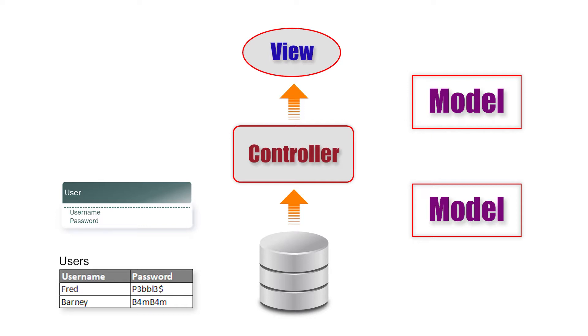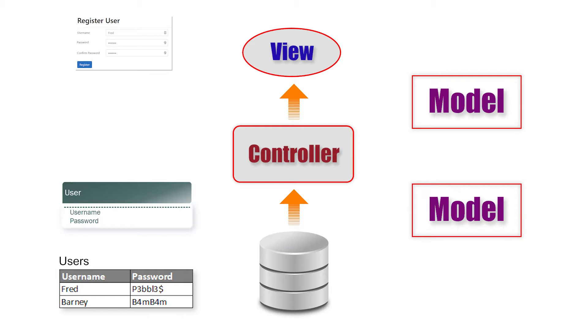But very quickly in any serious application they will start to diverge. For example, if all we want to do is register a user for login, in the database we'll have a table with at a bare minimum two columns: one for the username, one for the password. So the entity model class representing that table will just have those two properties. But when it comes to the view, we'll actually have username, password, and confirm password — so the MVC model would have three properties.